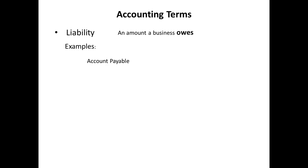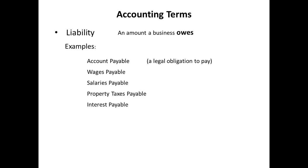An account receivable was a legal right to receive. An account payable is a legal obligation to pay. If the lawn business has any employees, it's likely the business owes employees their wages unless they're paid daily. Depending on the type of employees, it might owe salaries. A business might owe property taxes, interest, or for utilities used. Amounts owed for utilities are sometimes called accounts payable instead of utilities payable. But these are all examples of liabilities — amounts a business owes.